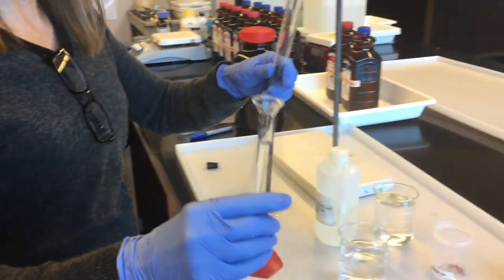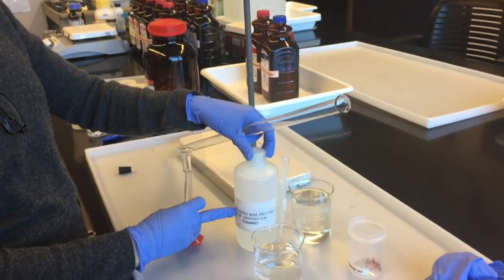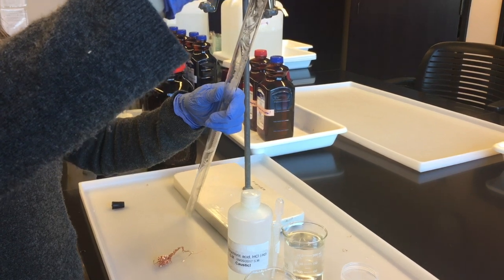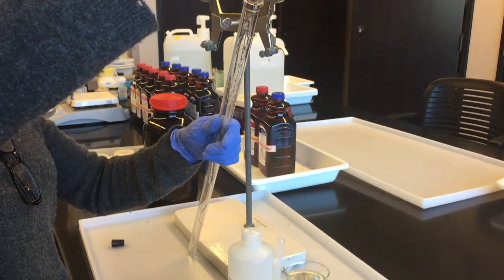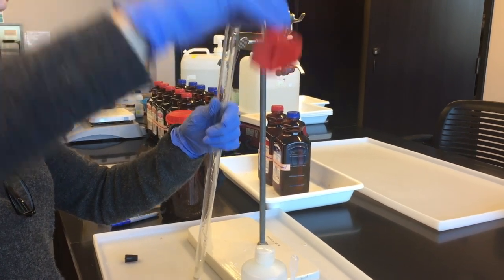First thing you're going to do is carefully pour the 10 milliliters of 6 molar hydrochloric acid that you measured out into the gas measuring tube. It's the thing going in the tube first. Make sure all the droplets get in.